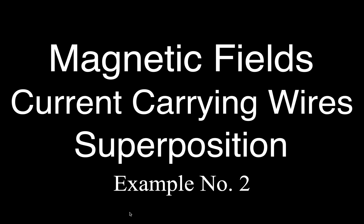In today's video, we are going to go over example number two for magnetic field for current-carrying wires. As it says wires, we're going to have more than one wire, and therefore more than one magnetic field, and therefore we're going to have superposition.